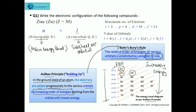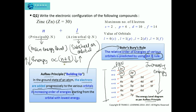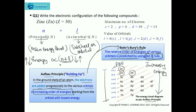As per this rule, energy is directly proportional to n plus l. If n plus l of an orbital is less compared to another, that orbital will have less energy; if n plus l is more, that orbital will have more energy. The orbital with lower n plus l will be filled first. In case two orbitals have the same n plus l, we will fill the orbital which has the lower principal quantum number 'n'. This is the basis we will follow in writing the electronic configuration.